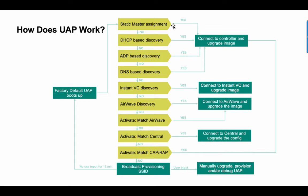If none of those four are configured, then we start to discover Instant. First, we check if there is already an Instant virtual controller active on the layer 2 subnet where this UAP is connected. If it finds a virtual controller, it connects, downloads the right image, and gets configured. If not, it tries to discover Airwave or goes to Aruba Activate to see if there is a match for Airwave or Aruba Central. In Activate, you can also configure it to become a Campus AP or a Remote AP.